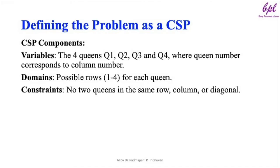Defining the problem as a CSP: the variables are the four queens q1, q2, q3, q4, where the queen number corresponds to the column number. The domains are possible rows from 1 to 4 for each queen, and the constraints are that no two queens can be in the same row, column, or diagonals. Now we have defined the four queens problem as a CSP. Let us look at how to solve this using backtracking search.